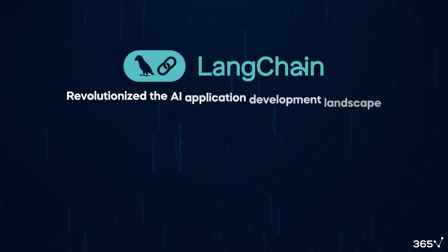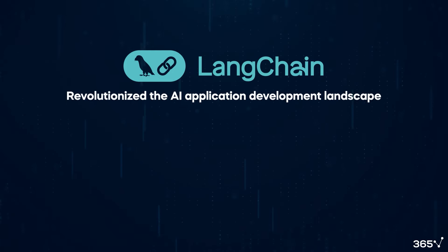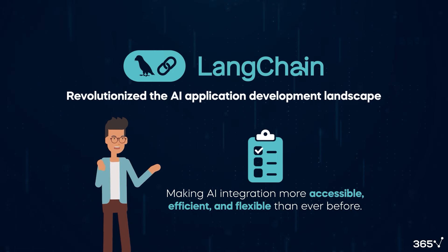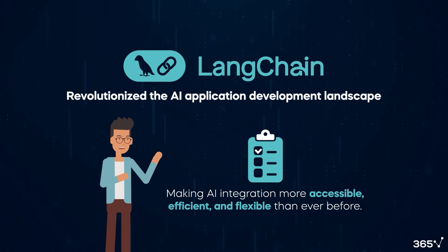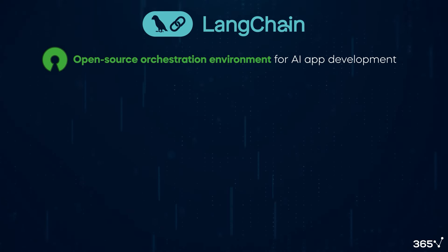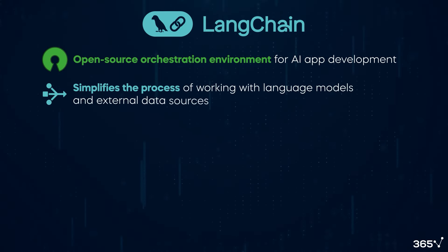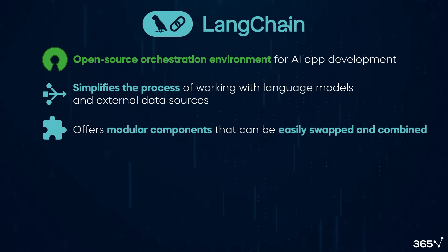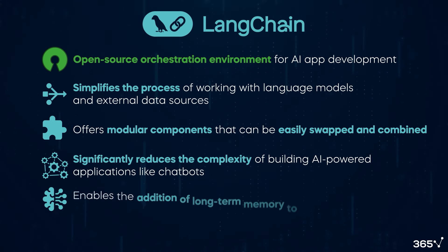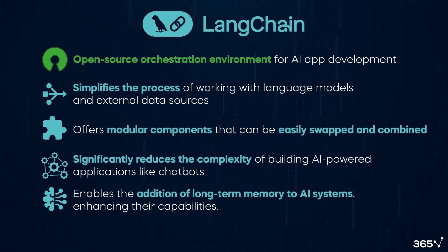LangChain has truly revolutionized the AI application development landscape. It's a powerful framework that makes AI integration more accessible, efficient, and flexible than ever before. To recap the key points: LangChain is an open-source orchestration environment for AI app development. It simplifies the process of working with language models and external data sources. LangChain offers modular components that can be easily swapped and combined. It significantly reduces the complexity of building AI-powered applications like chatbots. And finally, LangChain enables the addition of long-term memory to AI systems, enhancing their capabilities.